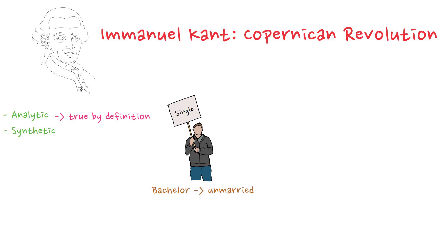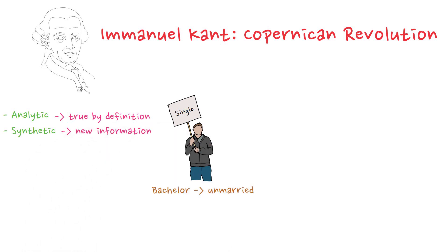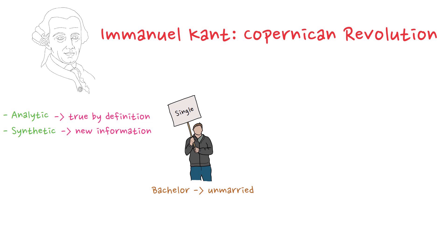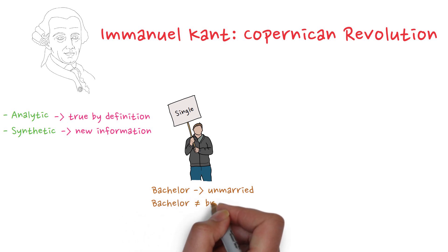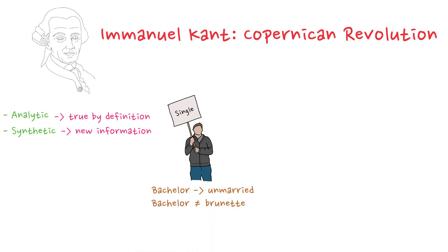These statements are always true, but do not provide us with new knowledge. On the other hand, synthetic statements do give us new information. Consider the statement: 'This bachelor is brunette.' This is not necessarily true just by understanding the definition of bachelor — we need to observe the world to determine its truth.